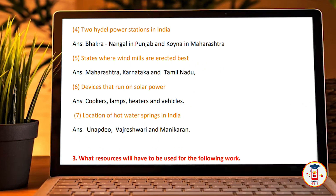Two ideal hydel power stations in India: Bhakra Nangal in Punjab and Koyna in Maharashtra.